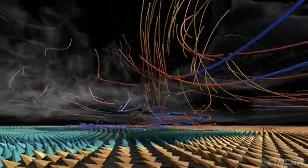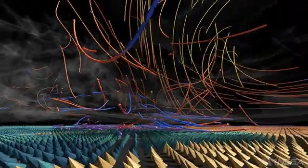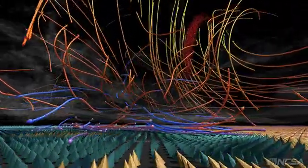As we look inside the storm, stream tubes colored by vertical velocity represent the motion of particles released into the airflow.